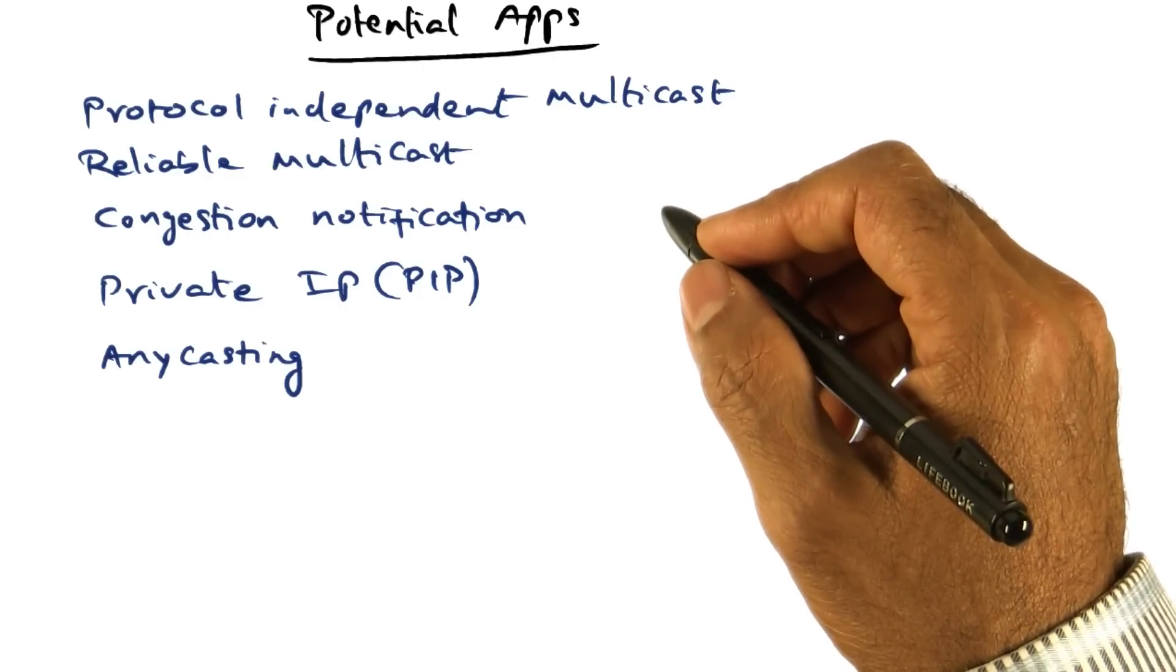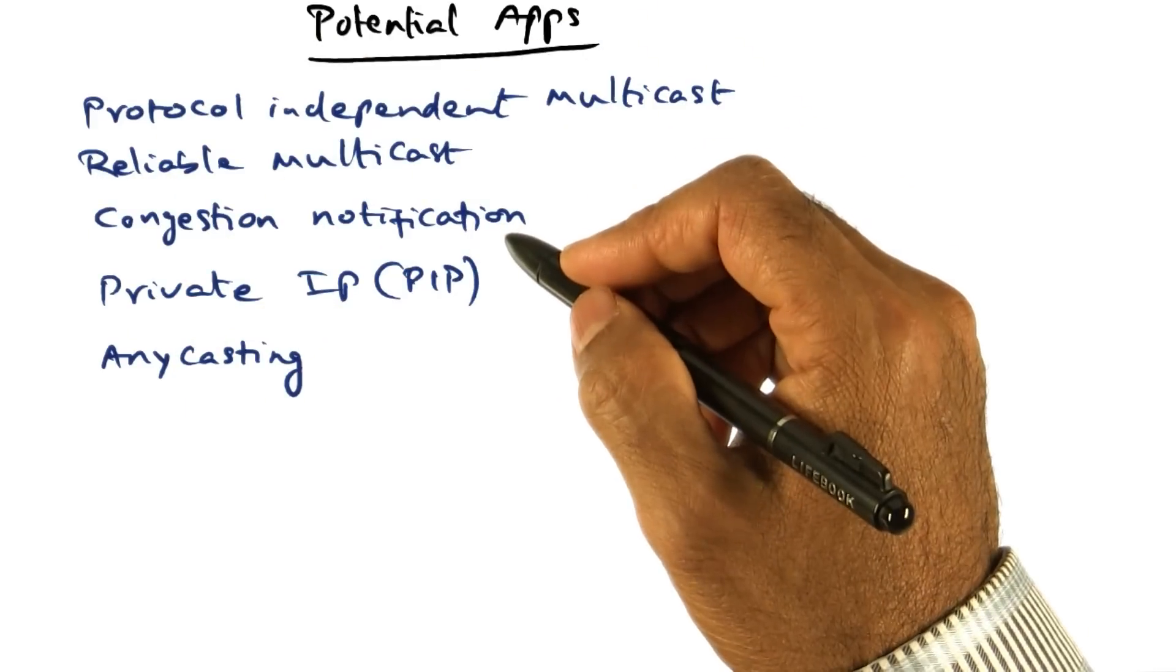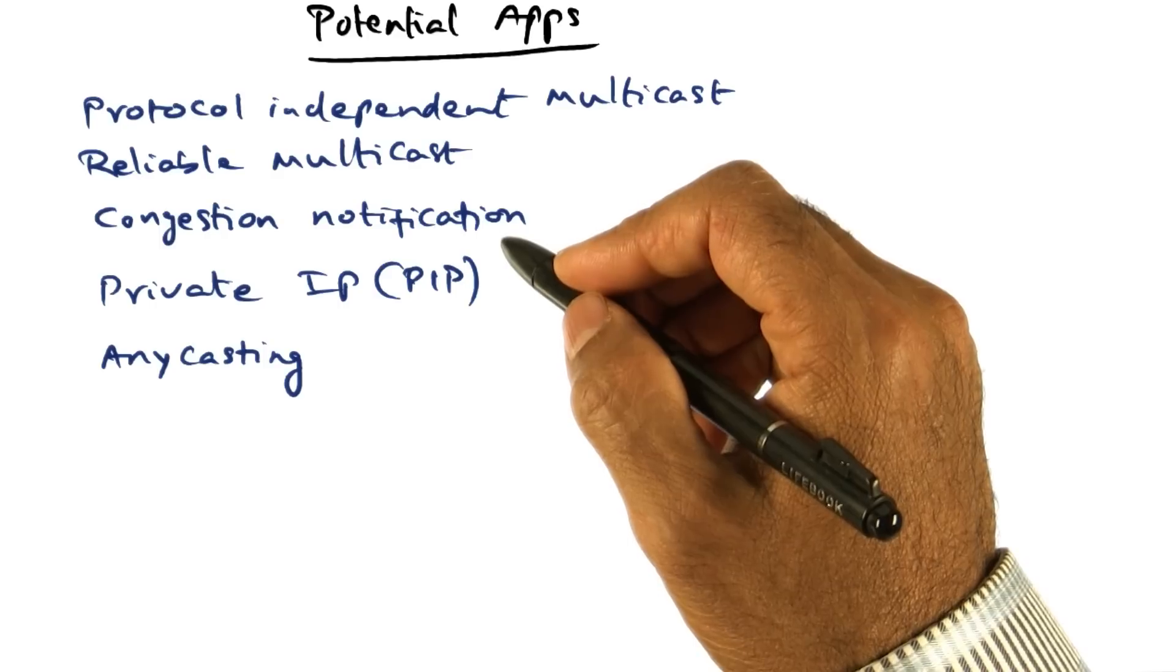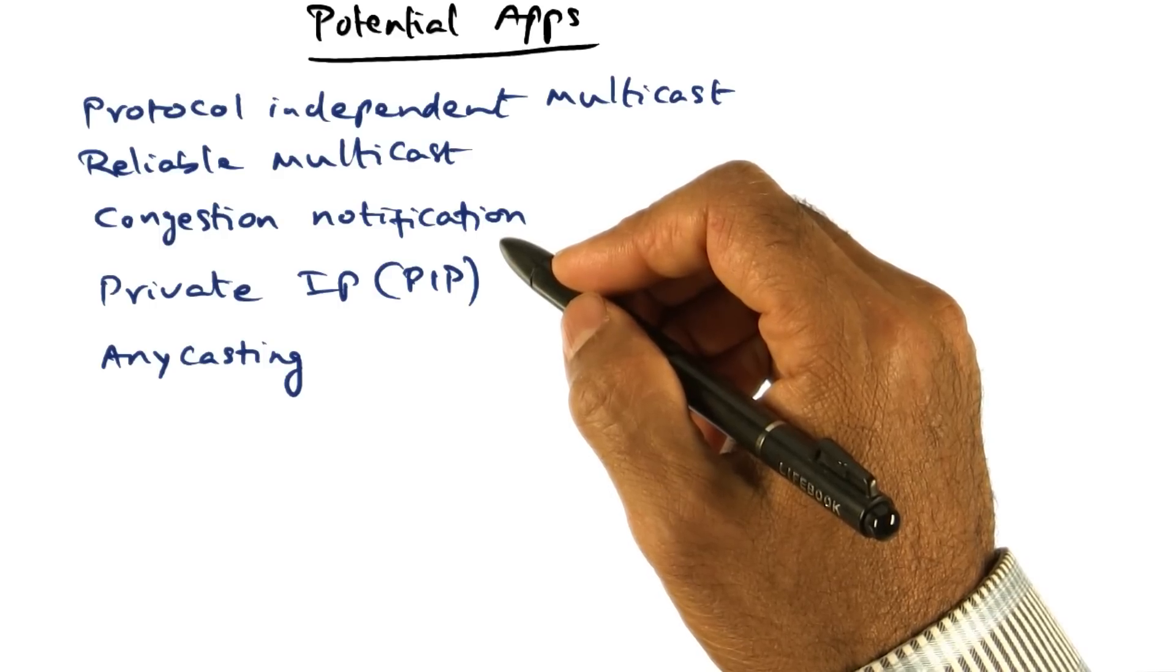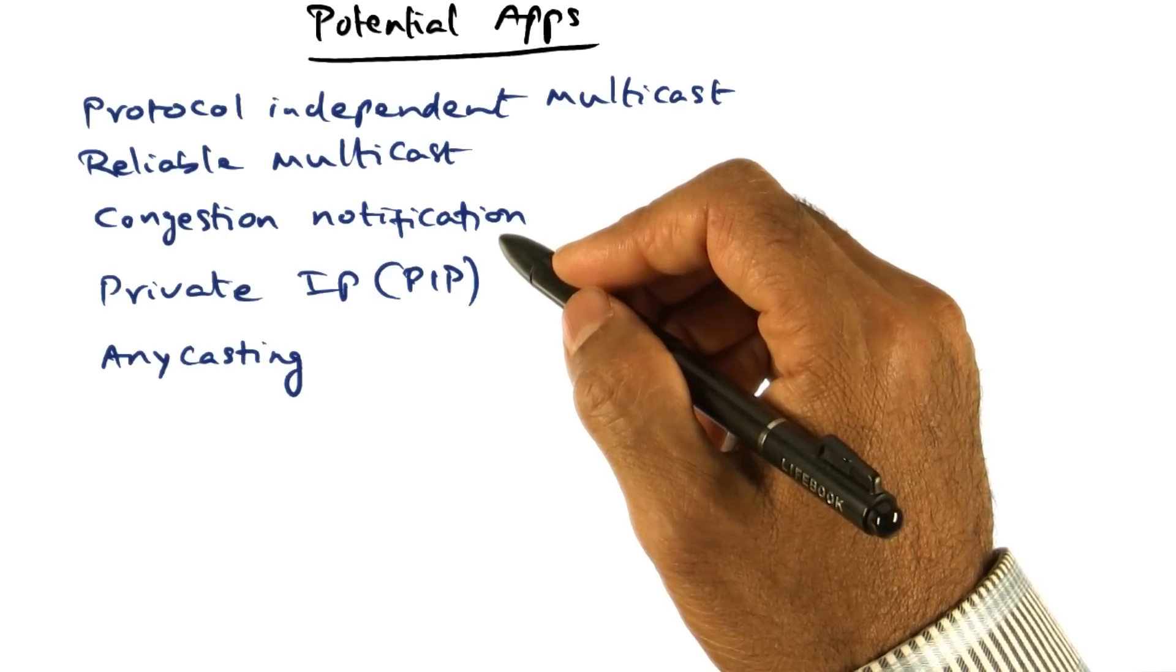The key properties for applications you want to build using the active networks paradigm is that applications should be expressible, compact, fast, and should not rely on all nodes being active.